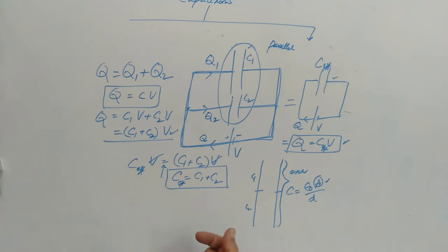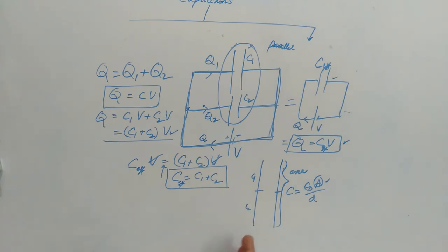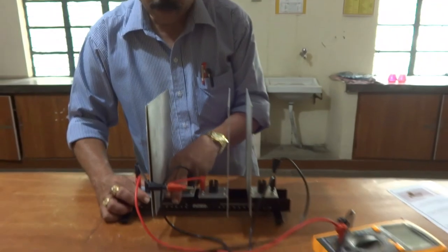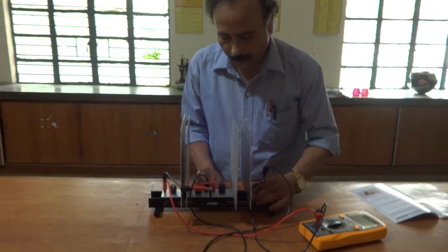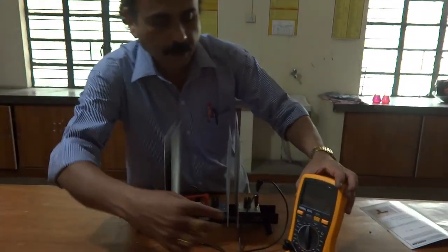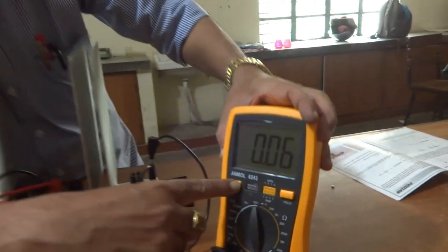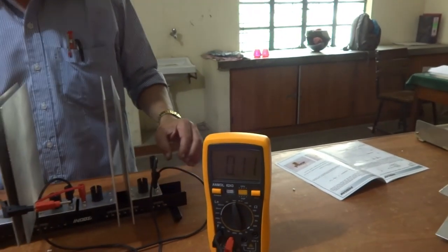These are the two ways capacitors can be connected. We will explore different combinations of capacitor connections while solving numericals. For the parallel demonstration: these two capacitors are connected in parallel — in parallel the capacitances add up, so since each was 0.06 and 0.07 individually, the combined value is now 0.11 farads, which confirms C_eff = C1 + C2.